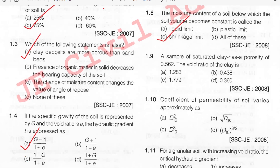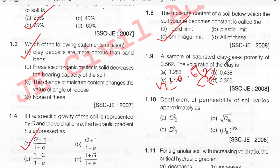A sample of saturated clay has a porosity n = 0.562. To find the voids ratio, using the relation E = n / (1 − n), substituting the given values gives us the answer.